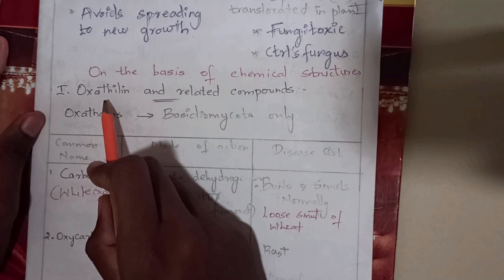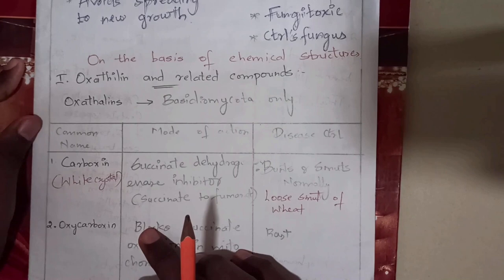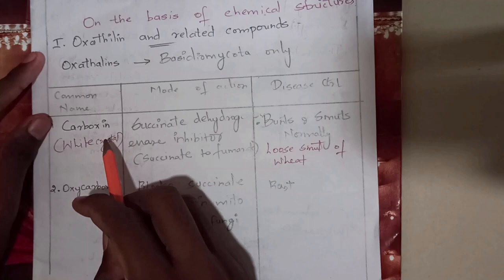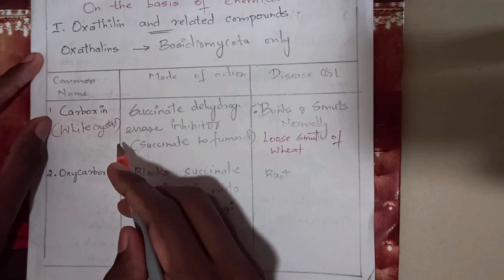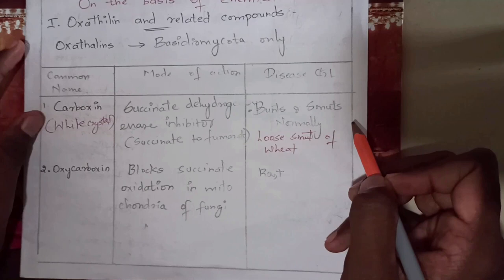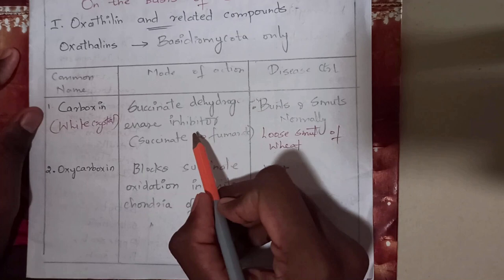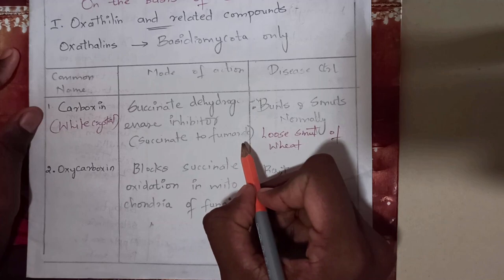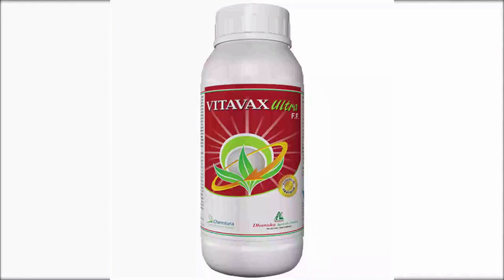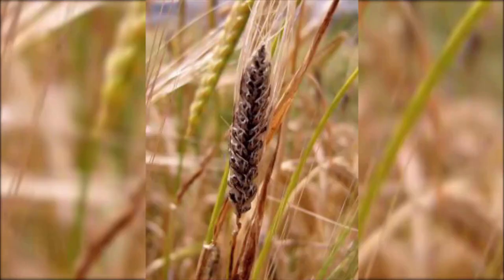The first group is the carboxyl compounds, mainly used for loose smut of wheat. Carboxyl inhibits succinate dehydrogenase, which converts succinate to fumarate. The trade name of carboxyl is Vitavax and it acts against smut of wheat.